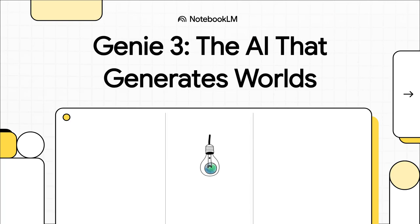Welcome to The Explainer. Today we are looking at something that feels like it's been ripped right out of a sci-fi novel. It's called Genie 3, a new AI from Google DeepMind that can literally generate entire interactive worlds from just a few words of text.